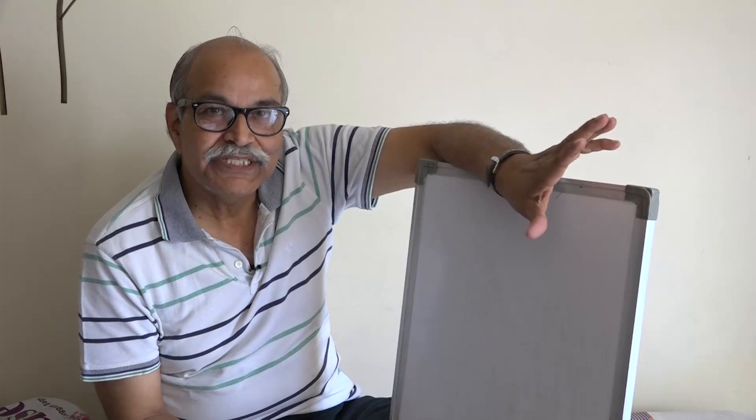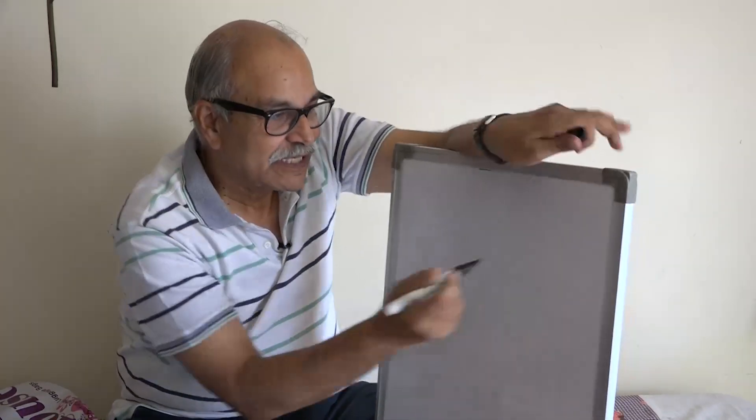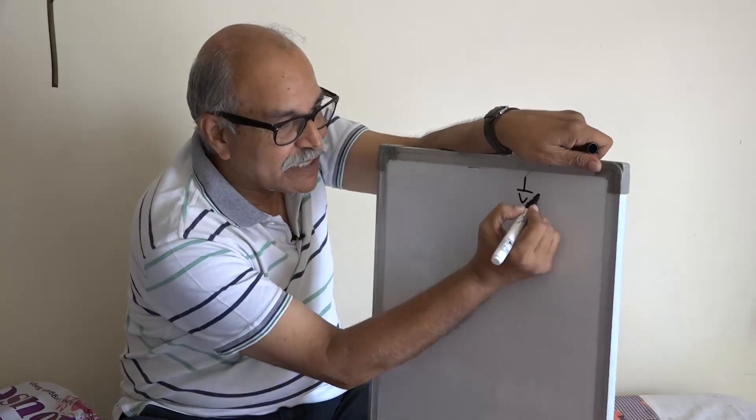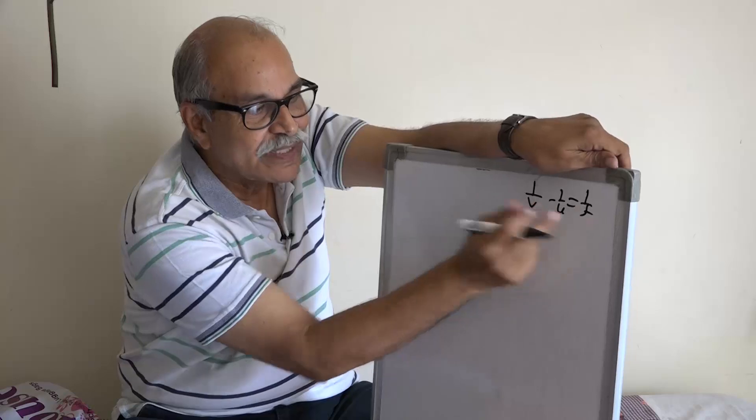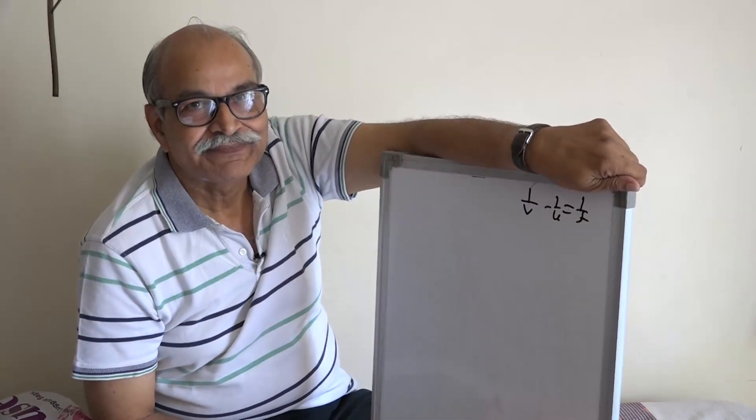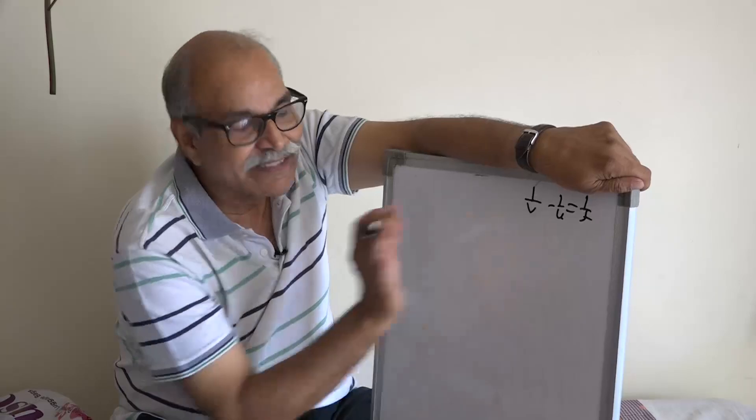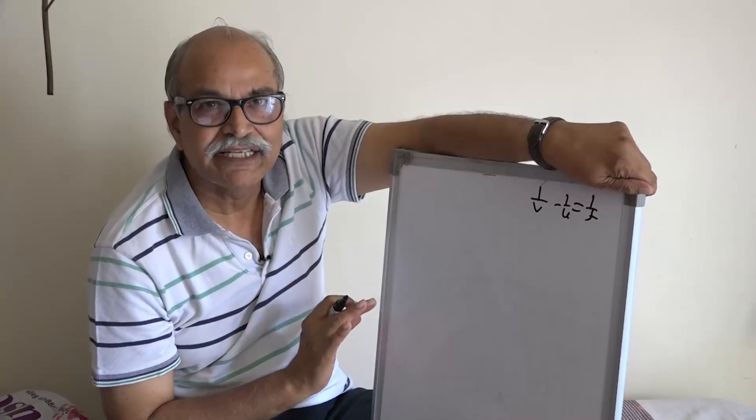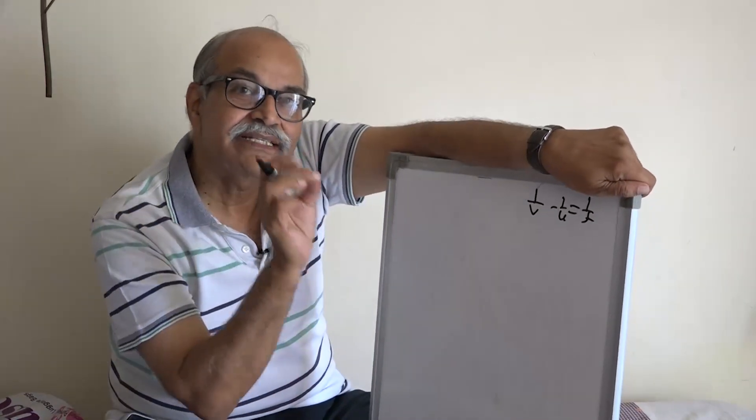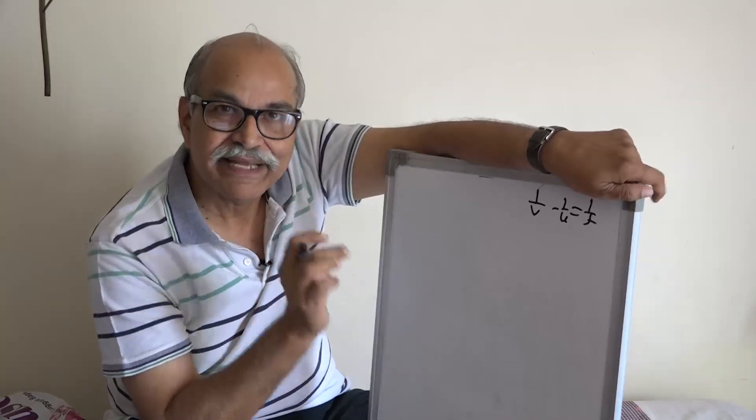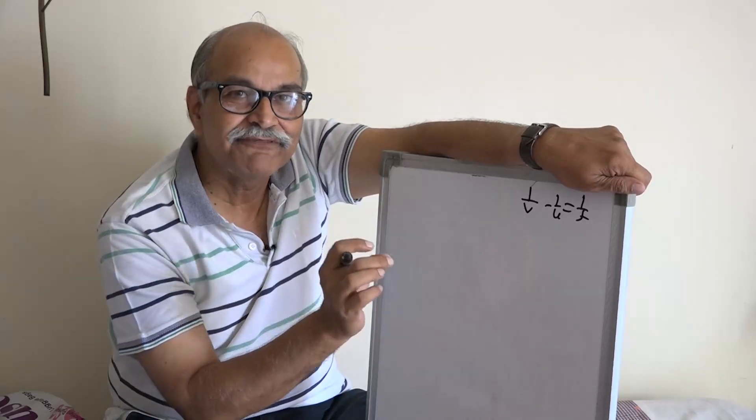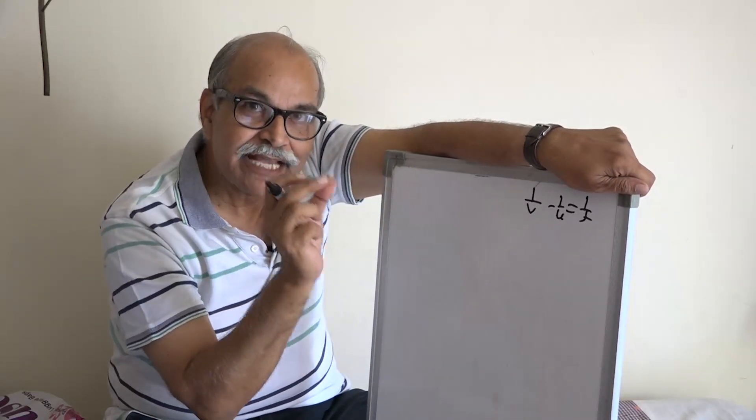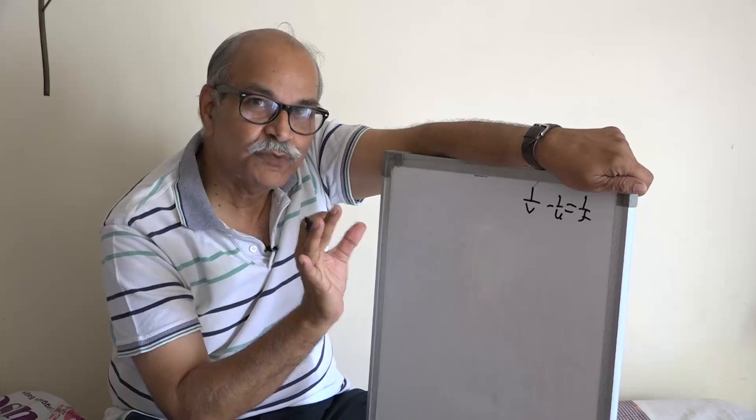Essentially when you use u, v, f in this equation 1 by v minus 1 by u equal to 1 by f, what these quantities are is important. Suppose it is just distance, I do not use sign convention, v is the distance of image from the lens, u is the distance of object from the lens and f is the focal length without any sign. What happens?